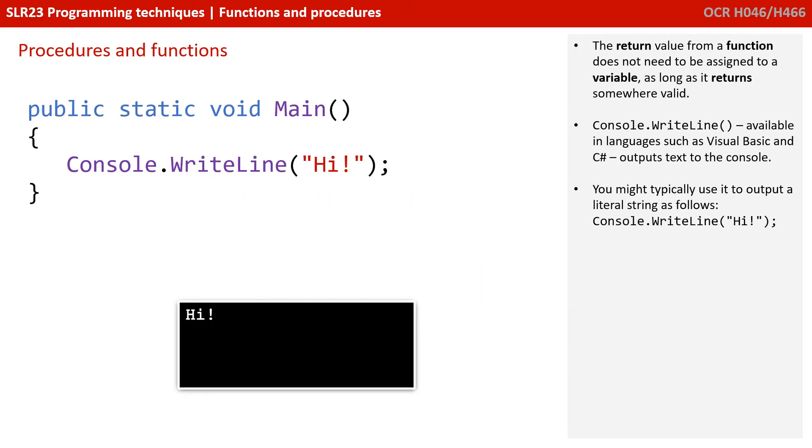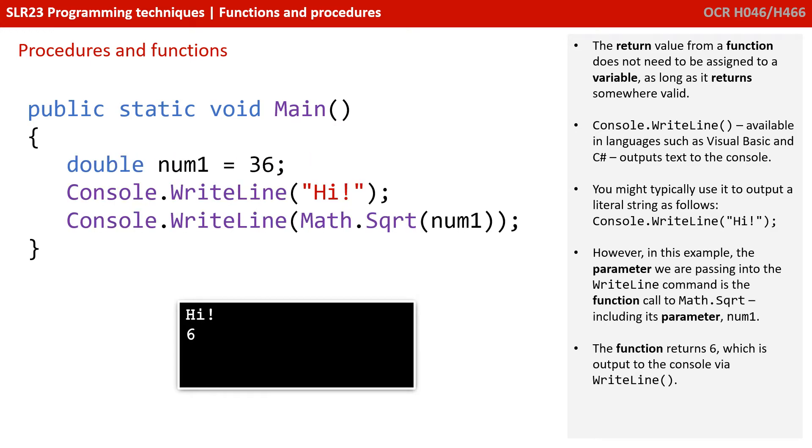Now, the return value from a function does not need to be assigned to a variable, so long as it returns somewhere valid. Console.writeline, available in languages such as Visual Basic and C-sharp, outputs text to a console command line. You might typically use it to output a literal string. However, in this example, the parameter we're passing into the write line command is the function call to math.sqrt, including its own parameter of num1. The function returns 6, which is output to the console via write line.